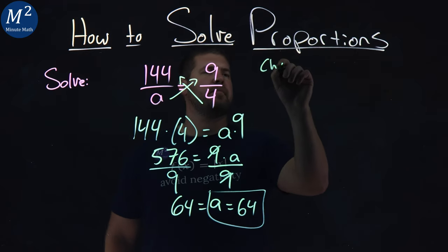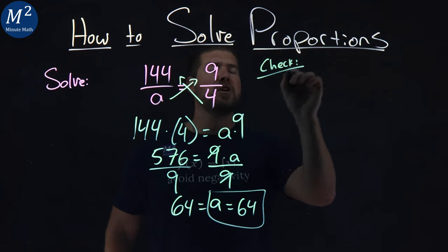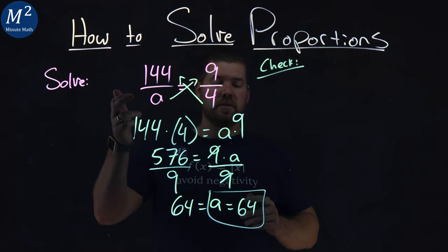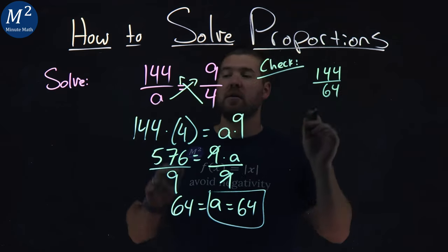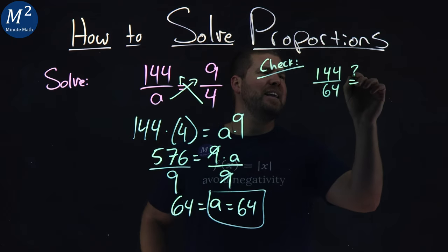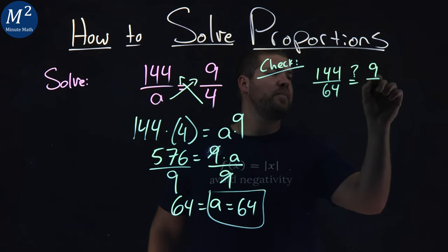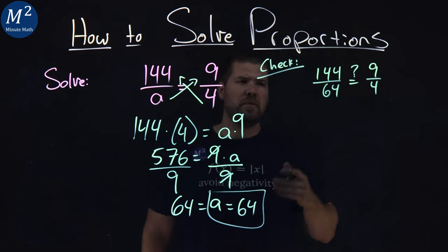Now, how do we check that? Well, to check it, we rewrite our proportion, and we put 64 in for A. 144 over 64, the A value. Is that equal to 9 over 4? I'm not sure. Let's go check it out.